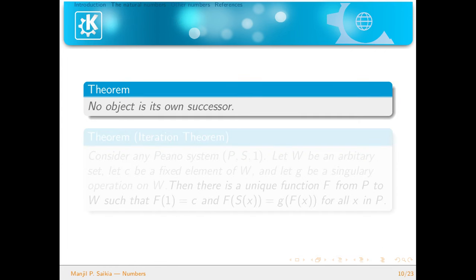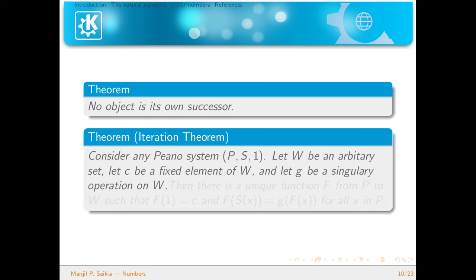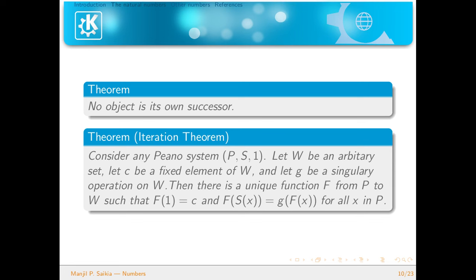The second theorem: no object is its own successor. This can be proved using the previous theorem and the axioms — we leave this as an exercise. Now we come to a very important theorem called the iteration theorem. We consider a Peano system (P, S, 1), let W be an arbitrary set, C a fixed element in W, and G a unary operation on W.